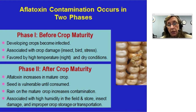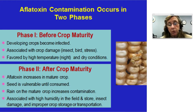Aflatoxin contamination occurs in two phases. Prior to harvesting the crop, the fungus gets in in the field and it is associated with crop damage or drought stress — for example, damage that can occur because of high heat. Nighttime temperatures when the corn is trying to grow, the silk can cut the grain and open it so that the fungus can get in and then it becomes toxic. Post-harvest, the aflatoxin increases as the crop is being handled and stored.